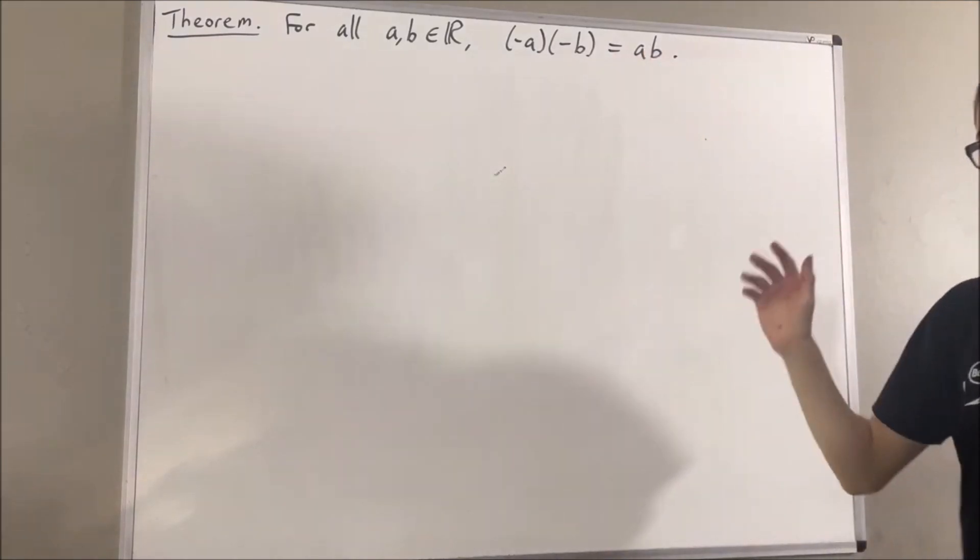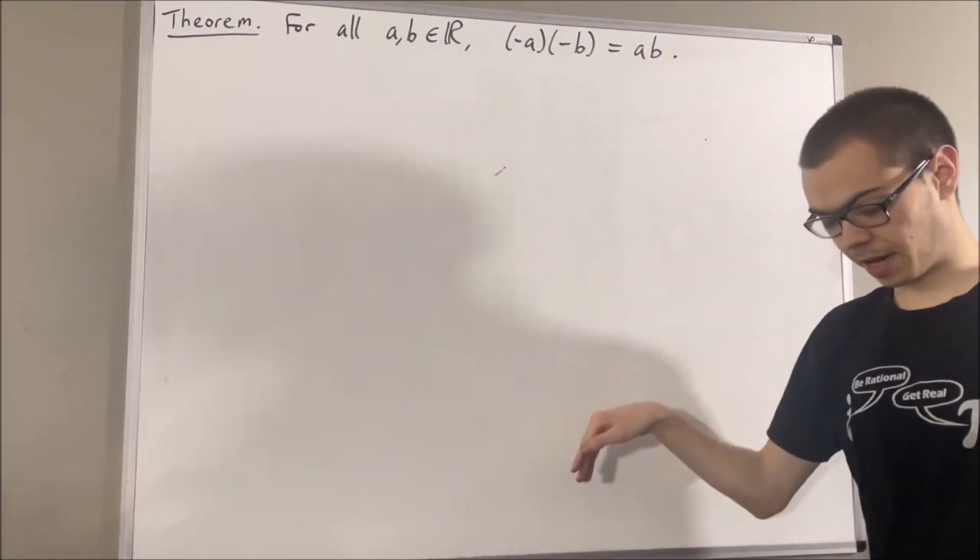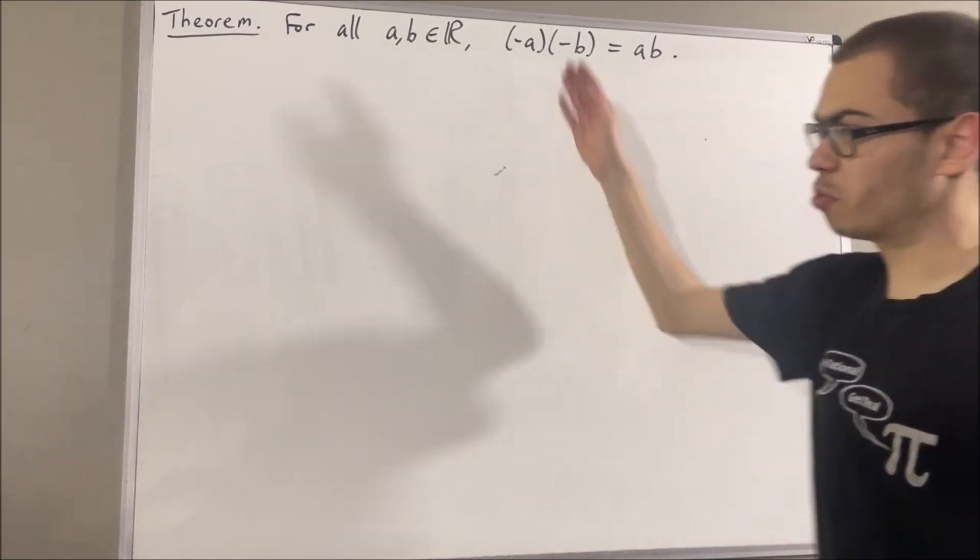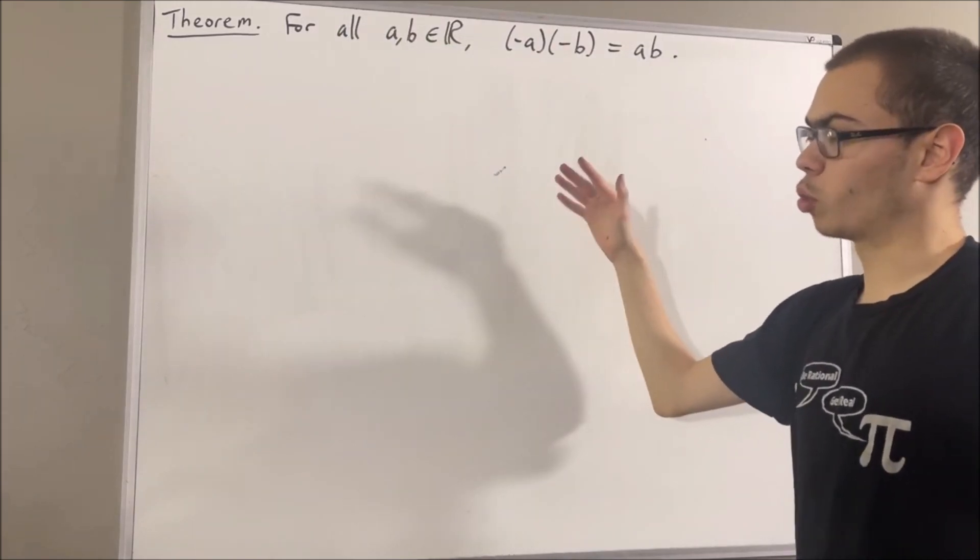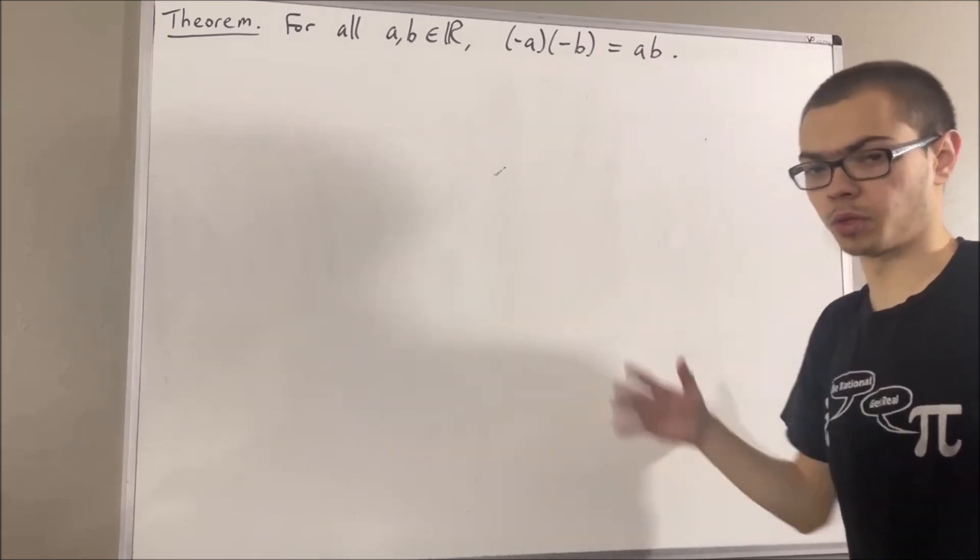Now in this series, we are using a list of 10 axioms for the real number system, and I'll leave that list of axioms in the description of the video below. In proving this theorem, we're not going to need to refer to any of the axioms directly, but rather, we're going to be using two results which we have proven regarding the real number system.